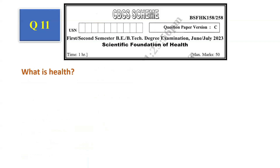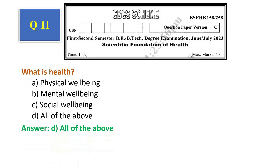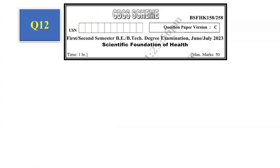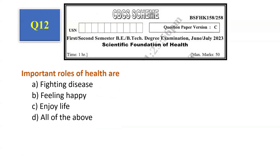Question number 11: What is health? Physical well-being, mental well-being, social well-being, all of the above. The answer is all of the above, that is option D. Question number 12: Important roles of health are — fighting disease, feeling happy, enjoy life, all of the above. The answer is all of the above, that is option D.